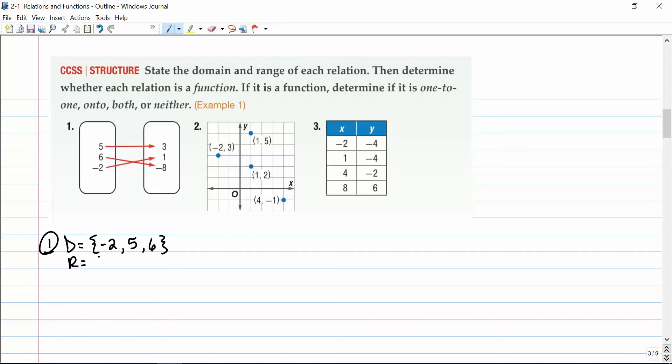The range is going to be the set of elements in the second bubble, or negative eight, one, and three. And because each x goes to only one y, it is indeed a function. And this is actually both one-to-one and onto, because there are no repeated x's and no repeated y's.